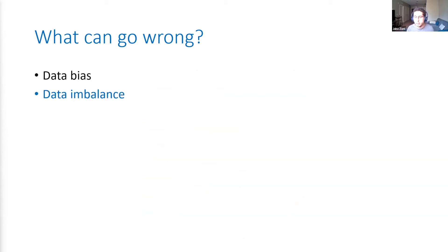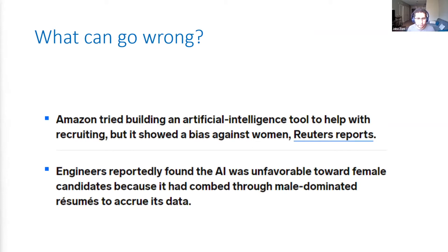There can also be issues with data imbalance. If you have much more data about the majority group than a minority group — which by definition is smaller — your algorithm might just overfit to the majority group if you're not careful. Amazon tried to build a machine learning algorithm to help with recruiting, but the algorithm showed bias against women. The reason was that the AI was trained on imbalanced data — the machine learning algorithm mostly saw résumés from male employees with very little information about female employees. So the algorithm learned to keep hiring people like the ones it had seen so far, which were mostly male.